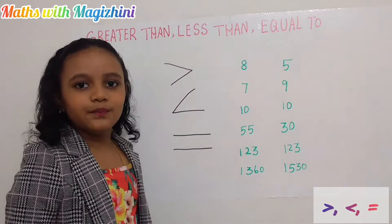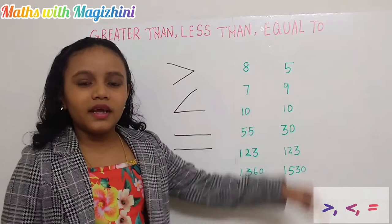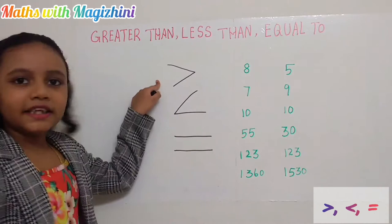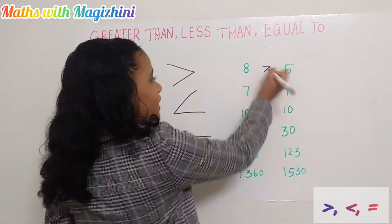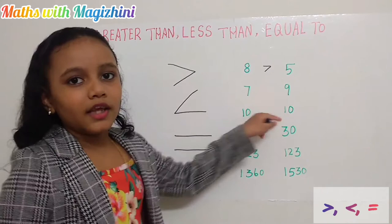Now let's do these problems. 8 is what to 5? 8 is greater than 5. So this is greater than, which means 8 is greater than 5.